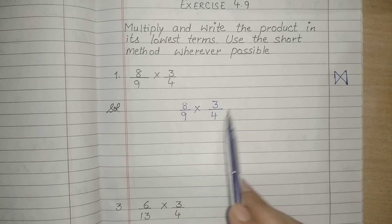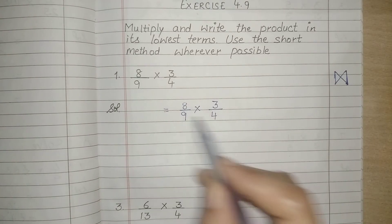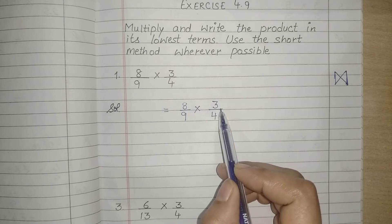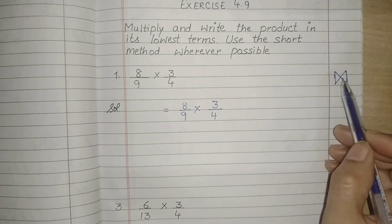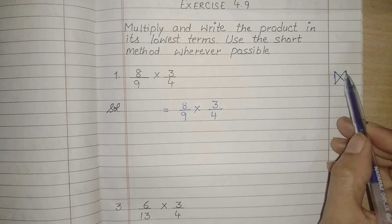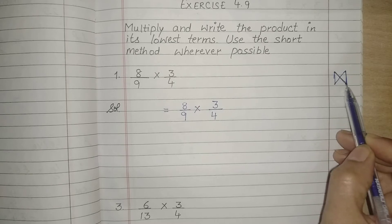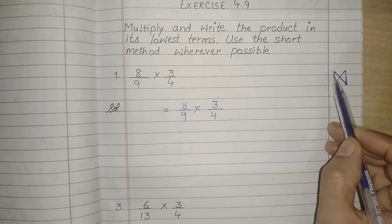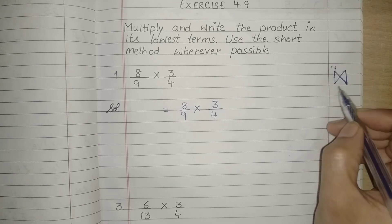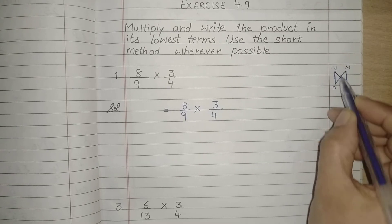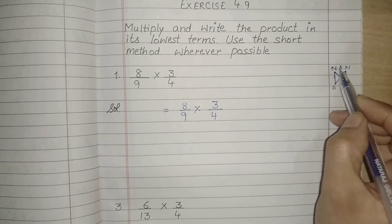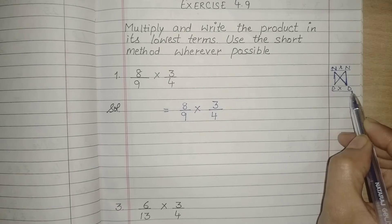When we multiply fractional numbers, we always have to remember this rule. We have to cancel all the time. We will cross it like a tie bow — you will either cancel it in cross or vertically. This means we can cancel numerator and denominator with each other.